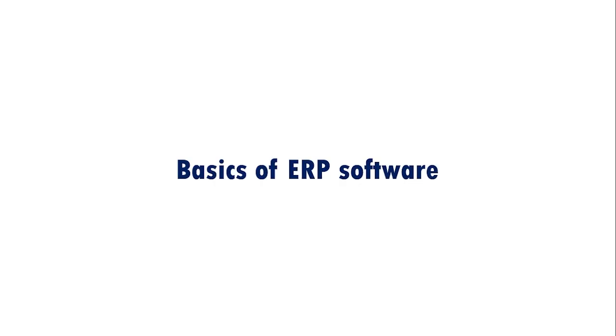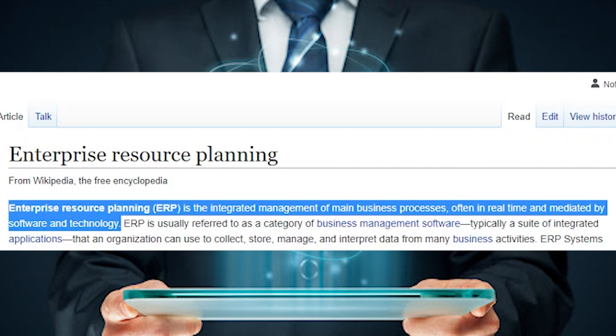Hi everyone, my name is Rajesh and in this video we are going to have a look at basics of ERP software. According to Wikipedia, ERP or enterprise resource planning is the integrated management of main business processes, often in real time and mediated by software and technology. Did you get anything out of that? I did not. Let's get into the practical definition of what is ERP.